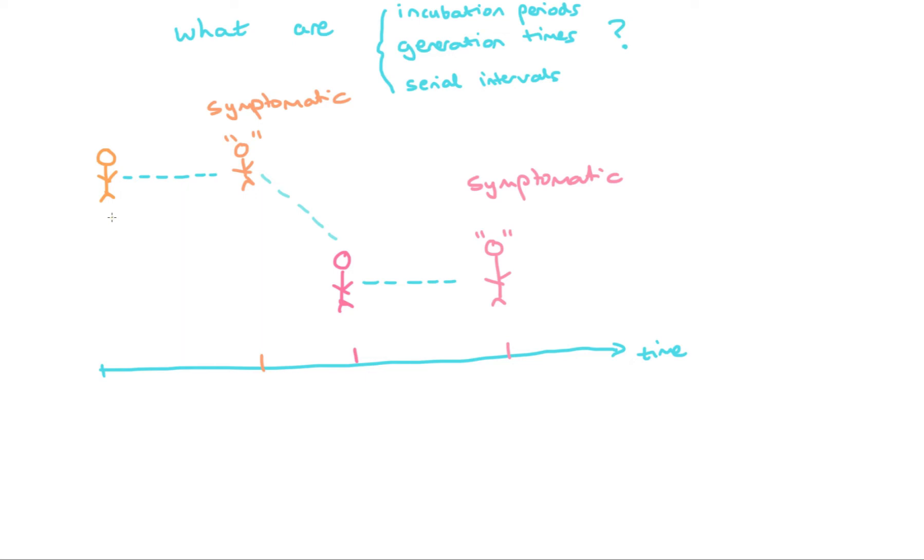Firstly, we consider the time period between which an individual becomes infected and when they show symptoms, if indeed they do show symptoms. That period is known as the incubation period. We can show the incubation period for individual one, and for individual two it's potentially a different amount of time.